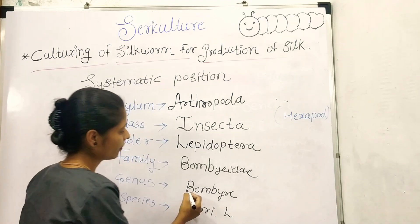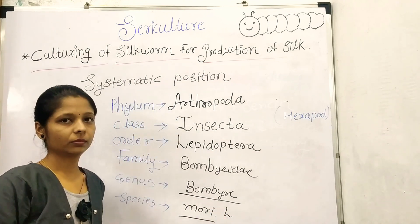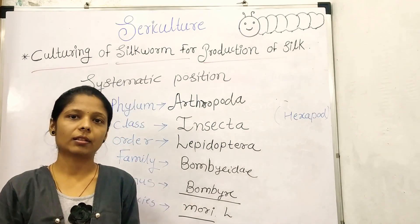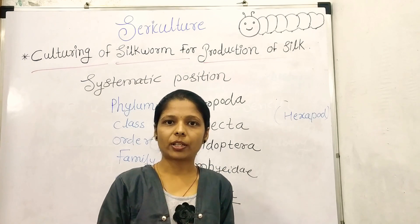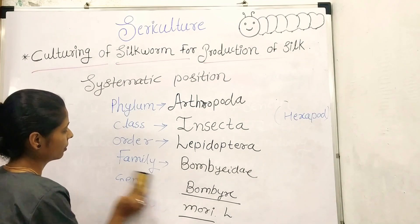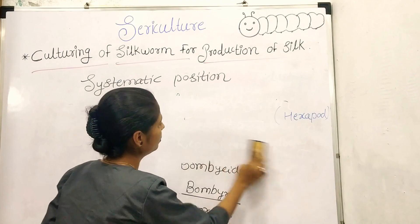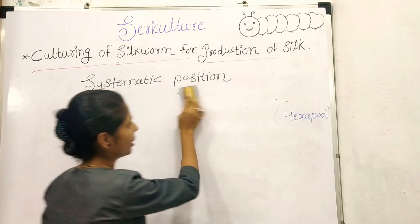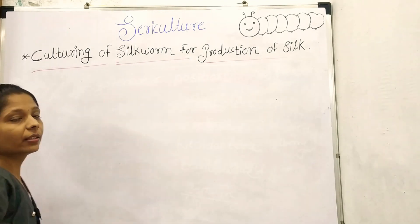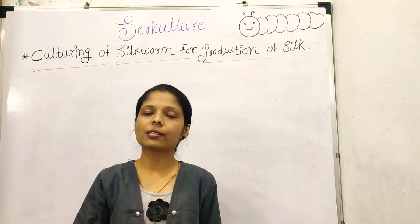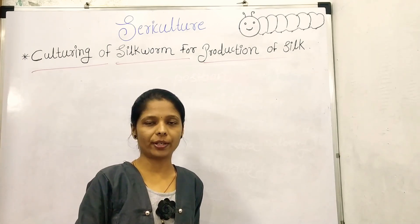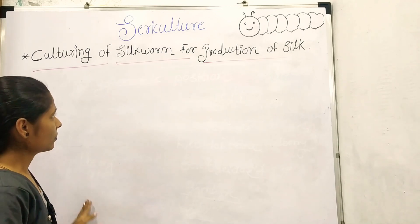When writing binomial nomenclature or scientific names, they are written in italic form, but when handwritten, they are underlined. We will now see the morphology of Bombyx mori through its various life stages: egg, larva, pupa, and adult. Note that anatomy means the study of internal structure, while morphology means the study of external structures.